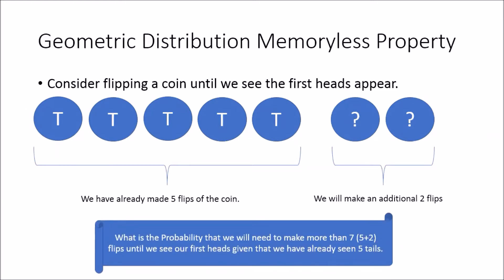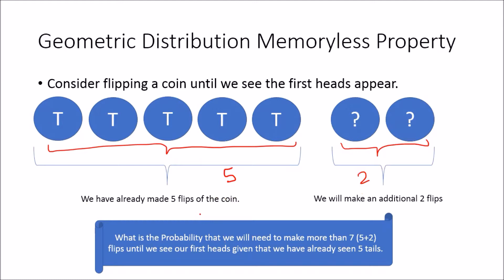So what is the probability that we will need to make more than seven flips — which is these five flips plus these two — to make the discussion easier, I'm splitting it into these five plus these two. What's the probability that we will need to make more than seven flips, so eight, nine, ten, and so on, until we see our first heads?